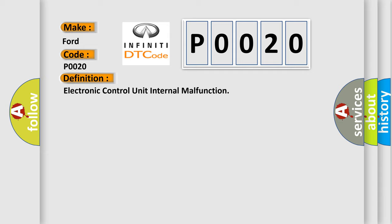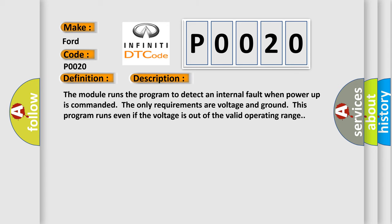And now this is a short description of this DTC code. The module runs the program to detect an internal fault when power-up is commanded. The only requirements are voltage and ground. This program runs even if the voltage is out of the valid operating range.